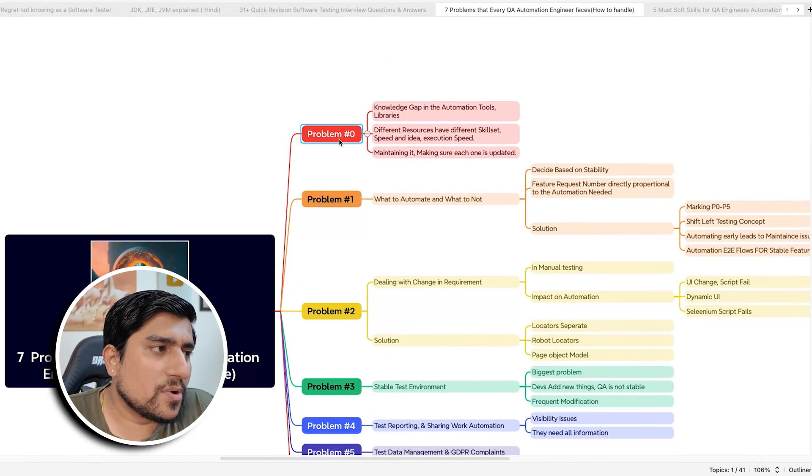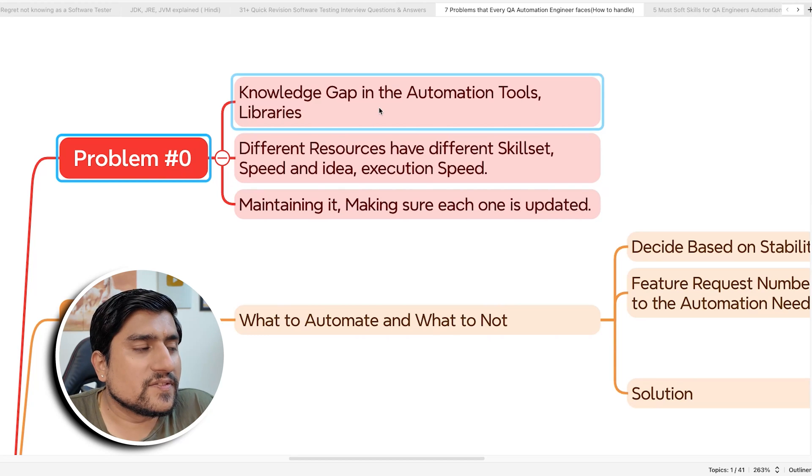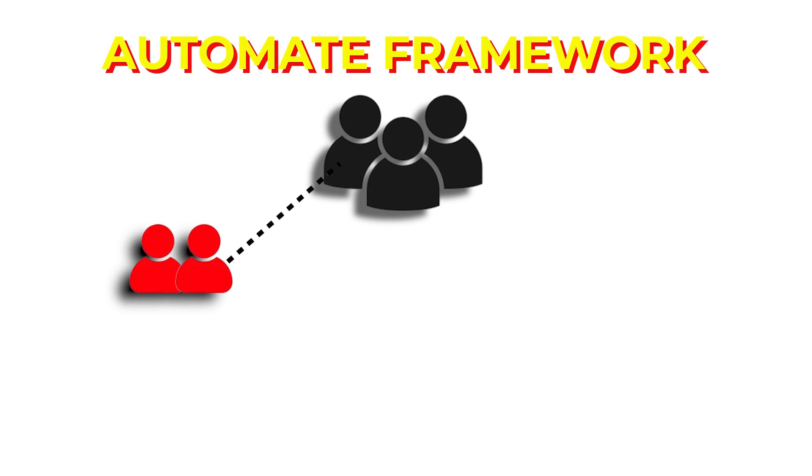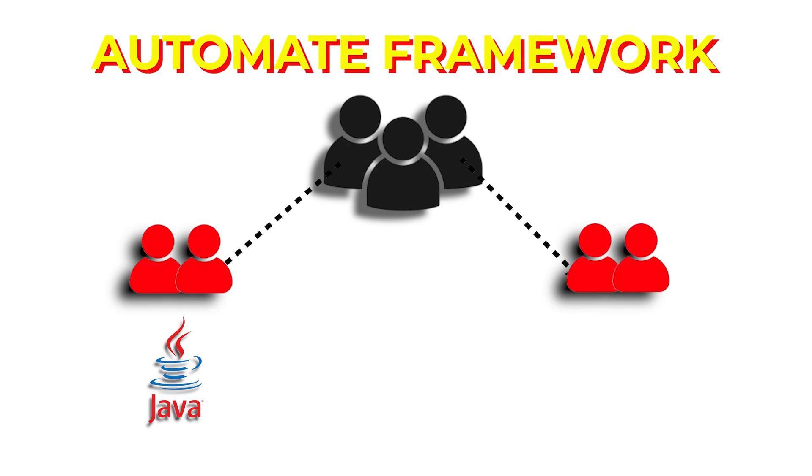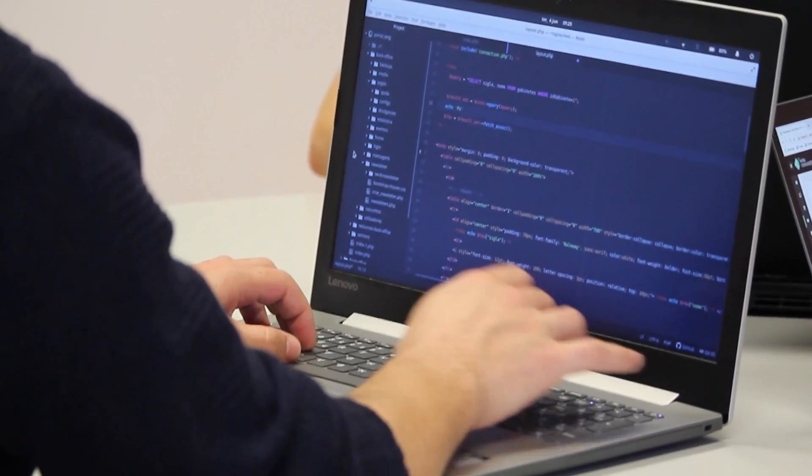The first one — problem number zero — which all of you will face, is the knowledge gap in automation. When I started, we were basically three people building an automation framework. Out of three, two people knew Java and two people knew Python, so there was always a debate: which one should we use — Java, Python, or another library?